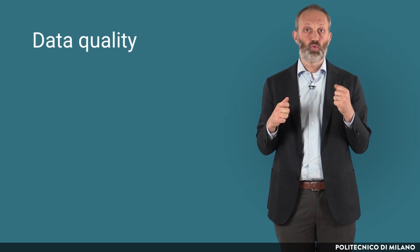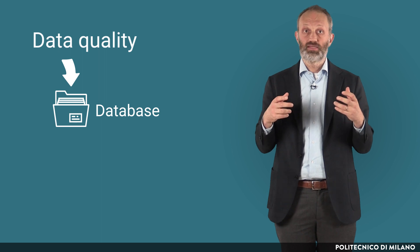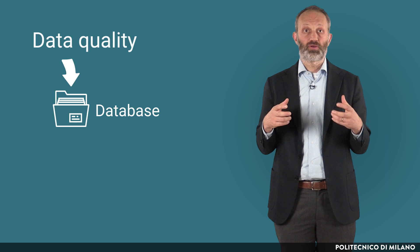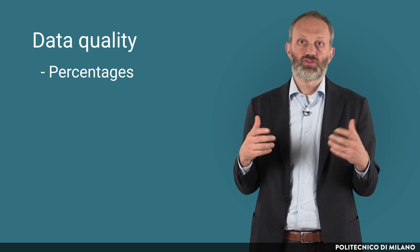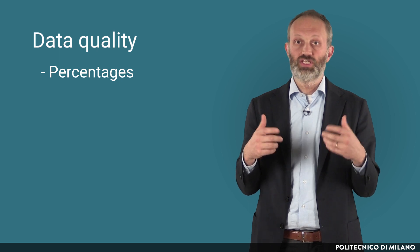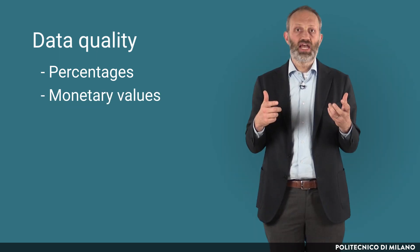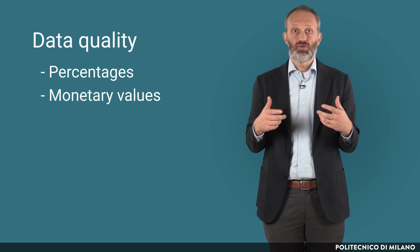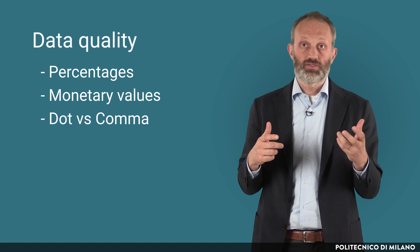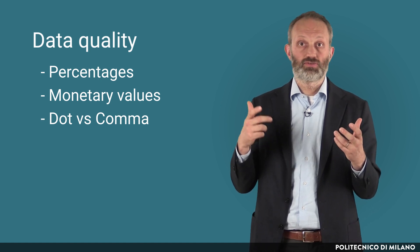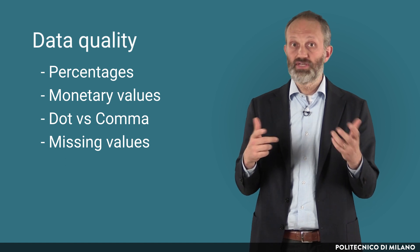Another important check is about data quality. We usually obtain a database in which every row is a respondent and every column is an item of the questionnaire. We need data that are in the proper format and scale. Percentages should add up to 100%. Monetary values need to be in the same currency and consistent — for example, it is not infrequent to find sales values in thousands instead of millions. The use of the dot or the comma has different meanings in Latin and Anglo-Saxon countries. Missing values should be reported as blank cells, not as zeros or other values, to avoid the risk of considering them as data.